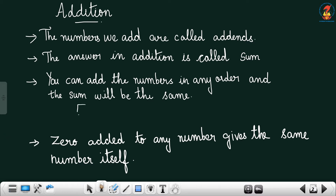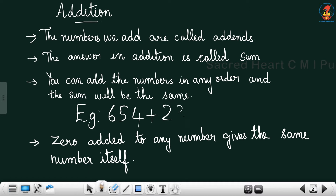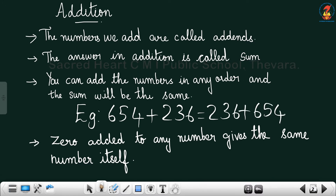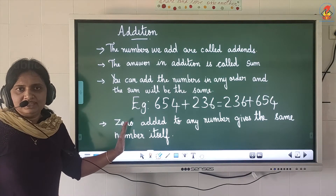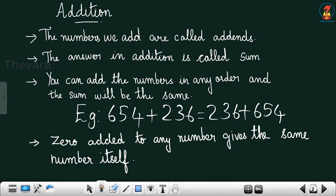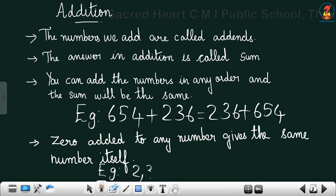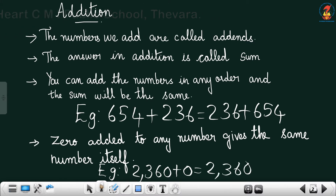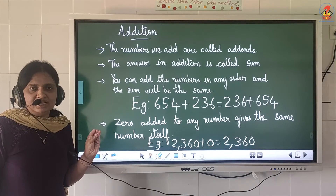Is it clear? I will give you one example. You can add the numbers: 654 plus 236 equals 236 plus 654. You can add the numbers in any order and you will get the same answer. The next rule is: 0 added to any number gives the same number itself. For example, 2,360 plus 0 equals 2,360.